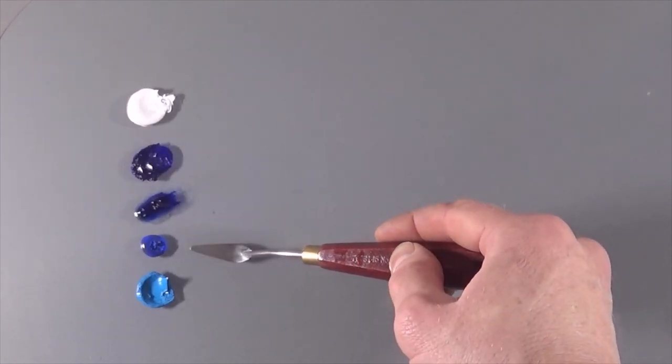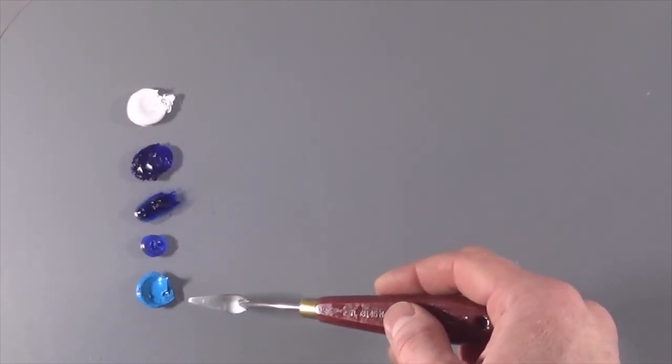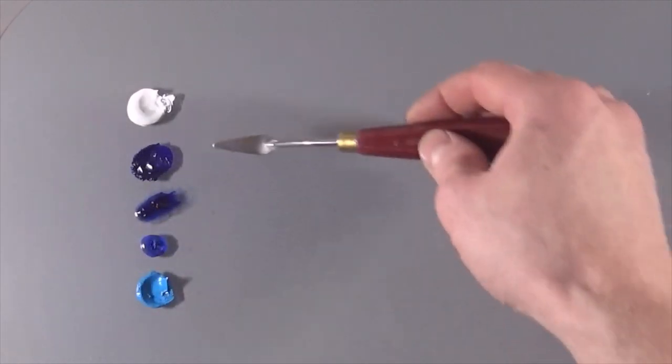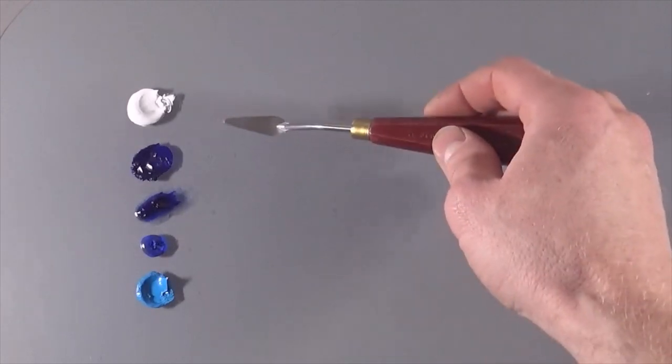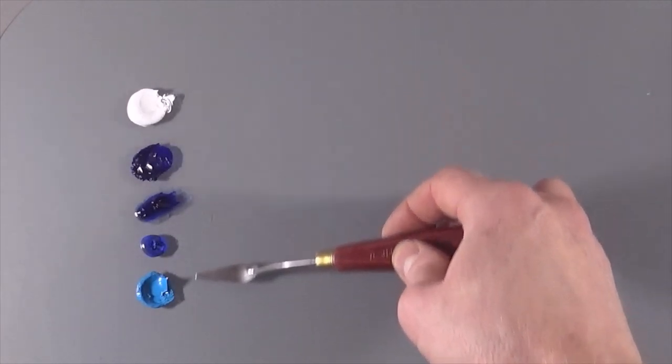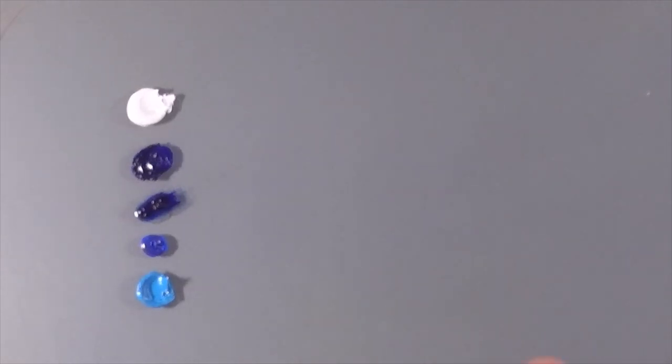Cobalt blue, cobalt blue hue in this case, and cerulean. So those colors are the sky from top to bottom as it goes from the deeper, more violet hues at the top down to the very pale color at the horizon.